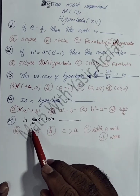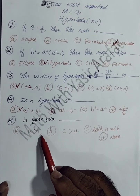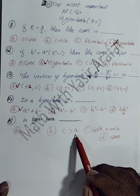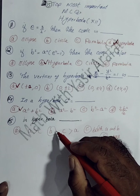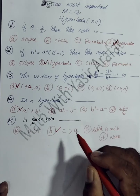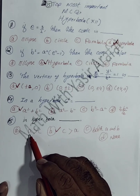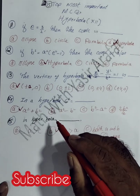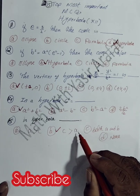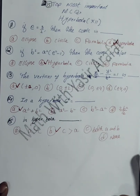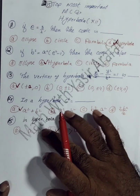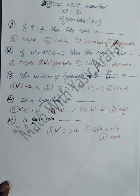The fifteenth MCQ: in a hyperbola, is A > C or C > A? In a hyperbola, C > A, whereas in an ellipse A > C. So for the hyperbola option B (C > A) is correct. Thank you so much, dear students. If you like this video, please share it and subscribe to my channel.